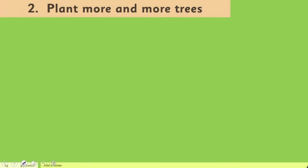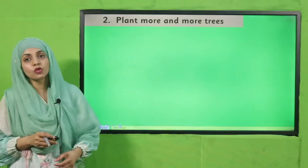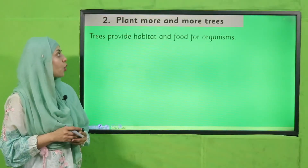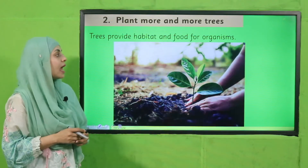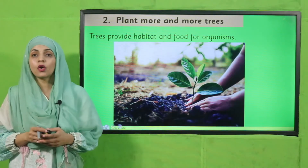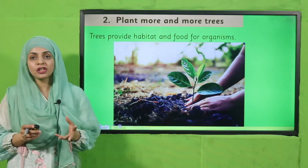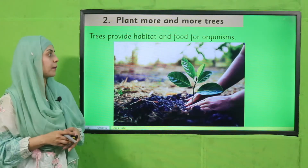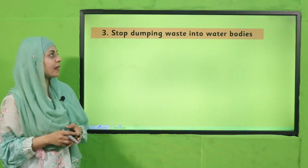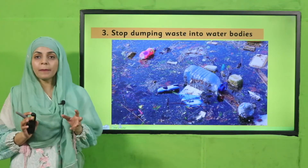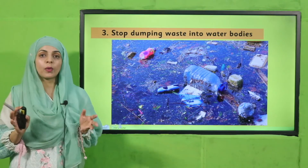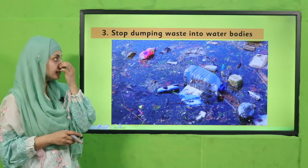Next, plant more and more trees — the more plantation we do, the more pollution will be controlled. Trees provide habitat and food for organisms and are also a source of fresh and clean air. Next, stop dumping waste into water bodies — if we do not dump waste, the aquatic ecosystem will be preserved.